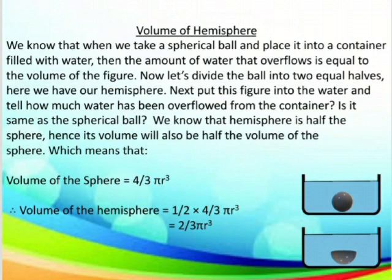Now let us perform an activity to find the volume of a hemisphere. We all know that when we take a spherical ball and place it into a container filled with water, the amount of water that overflows is equal to the volume of the figure. Now let us divide the ball into two equal halves — what we obtain is our hemisphere. We put this hemisphere into water and the amount of water which overflows is equal to the volume of the hemisphere. Since a hemisphere is half of a sphere, its volume will also be half the volume of a sphere. We know that the volume of a sphere is 4/3 π r³. Hence, the volume of a hemisphere would be half of 4/3 π r³, that is 2/3 π r³.